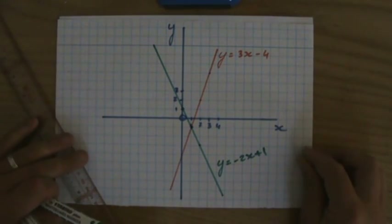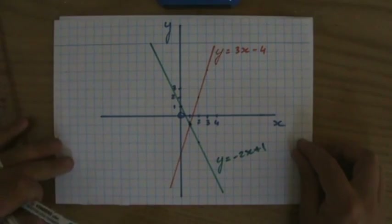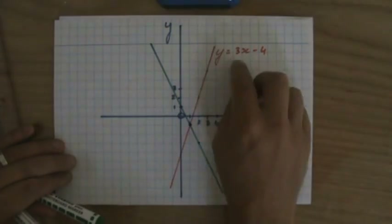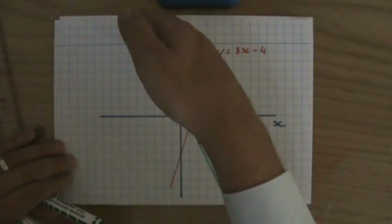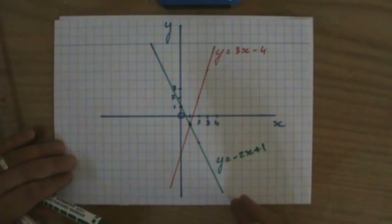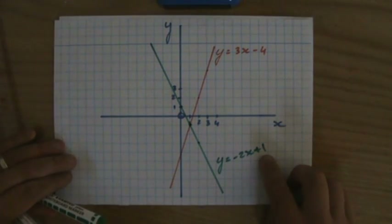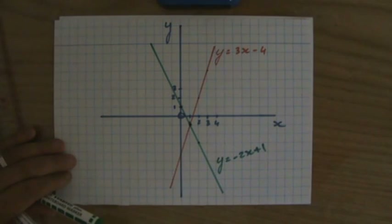So I've graphed my linear equations in one set of axes. One line is going up — that's 3x minus 4. One line is going down — that's minus 2x plus 1. Now it's your turn. All the best!